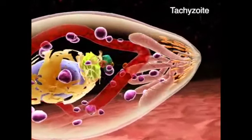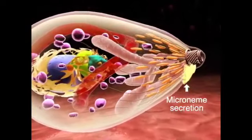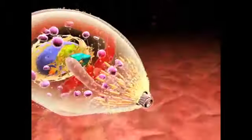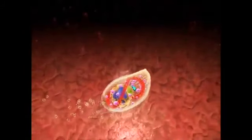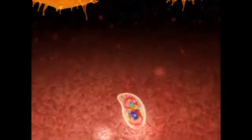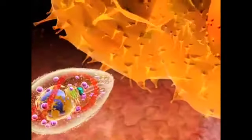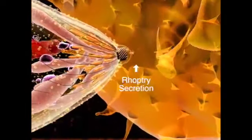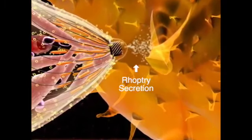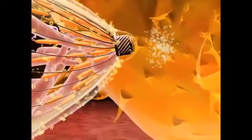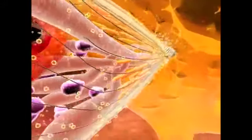The tachyzoite of Toxoplasma gondii moves by gliding in the extracellular space, projecting this hollow-cylindric structure, the conoid, and secreting proteins from the micronemes, here seen as yellow circles. When a target cell is found, as this macrophage, the tachyzoite adheres to it and starts to secrete the contents of the rhoptries, that we see here as white bubbles. This modifies the properties of the plasma membrane of the host cell, which becomes receptive to invasion.